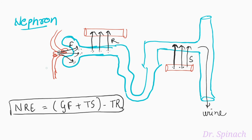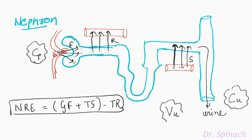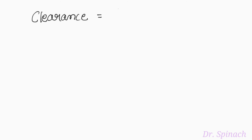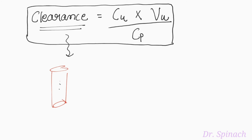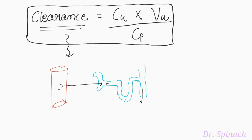Now let's understand some important parameters used in excretion. Let's say Cp is the concentration of drug in plasma, Cu is the concentration of drug in urine, and Vu is the rate at which urine is produced. Therefore, clearance equals Cu multiplied by Vu divided by Cp. What does it actually mean? It means: given a certain amount of drug in plasma, how quickly can our body get rid of it?